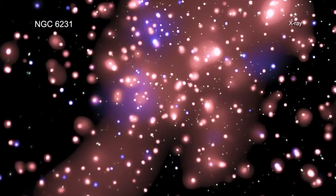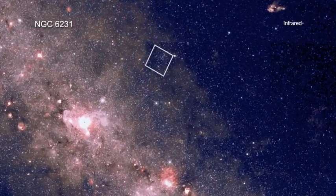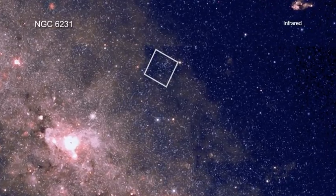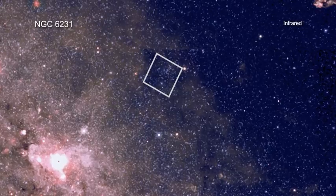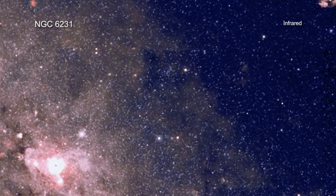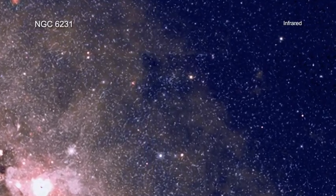The discovery of NGC 6231 is attributed to Giovanni Battista Hodierna, an Italian mathematician and priest, who published observations of the cluster in 1654. Sky watchers today can find the star cluster to the southwest of the tail of the constellation Scorpius.